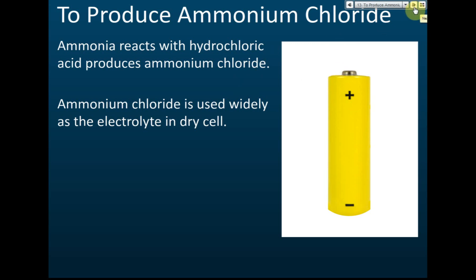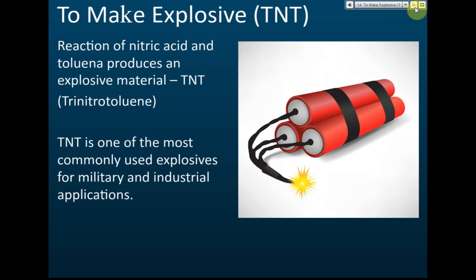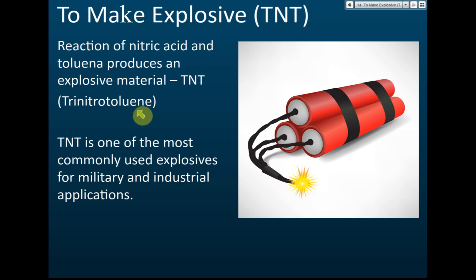Ammonia can also be used to make TNT explosive — trinitrotoluene. TNT is one of the most commonly used explosives for military and industrial applications. Those are the uses of ammonia.